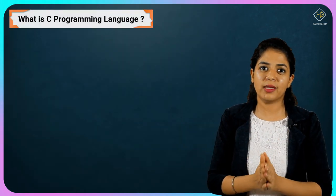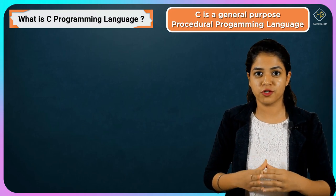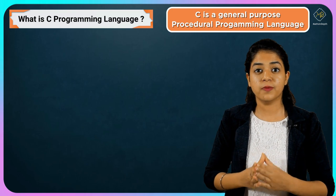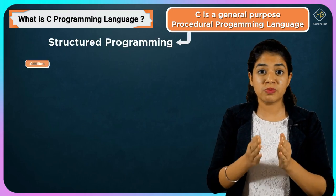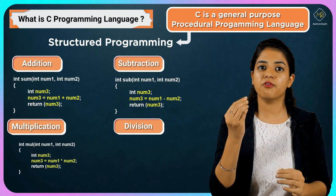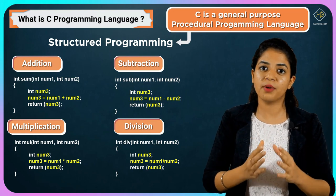Now what is C programming language? C is a general purpose, procedural programming language. C is a structured programming language in which we write functions or procedures. That is why we also call C a procedural programming language.